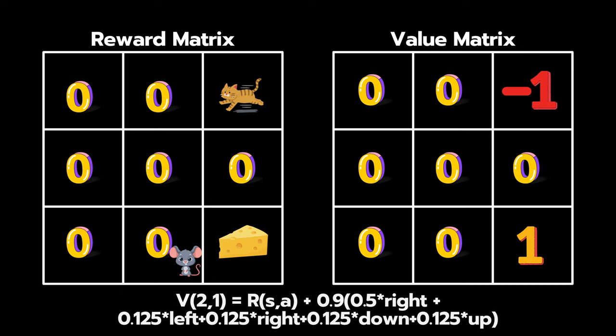So we can calculate the value of state 2,1 now using the Bellman equation, which is the immediate reward plus the discount factor gamma multiplied by the weighted probability values and the value of the state that those actions will take him into.